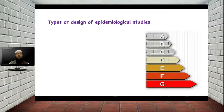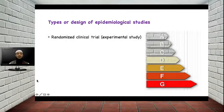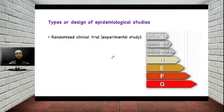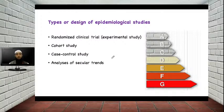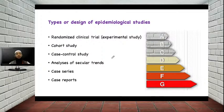Epidemiological studies are designed into different categories: randomized clinical trial, which is basically an experimental study done based on some observation on a particular patient; second is the cohort study; third is the case control study; fourth is analysis of secular trend; fifth is the case series; and sixth is the case report. These are the different types or designs of epidemiological study.